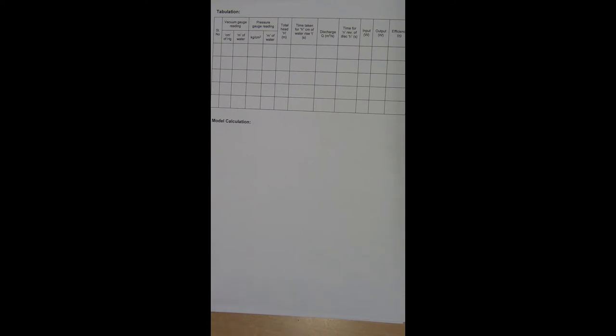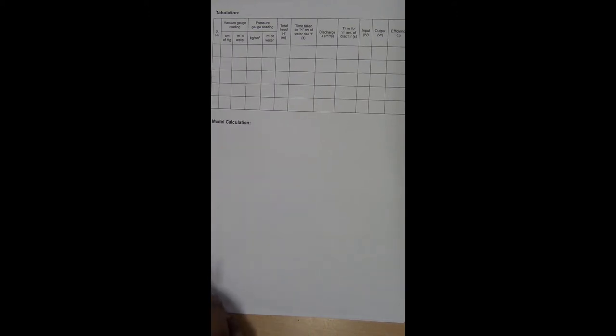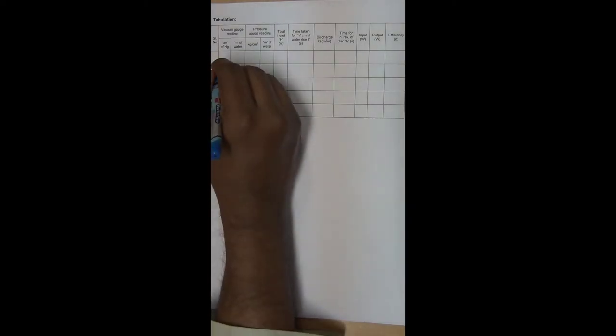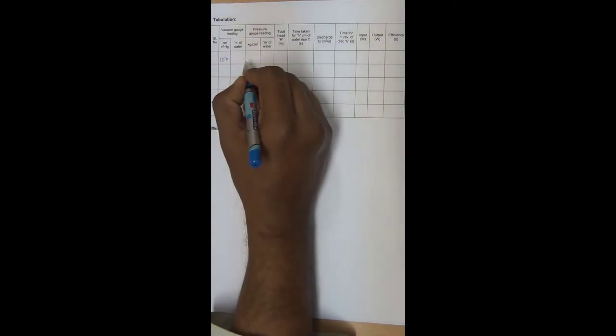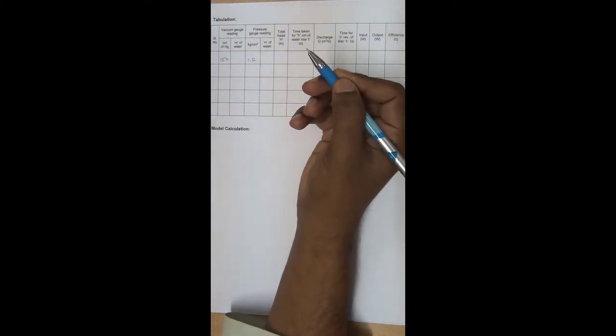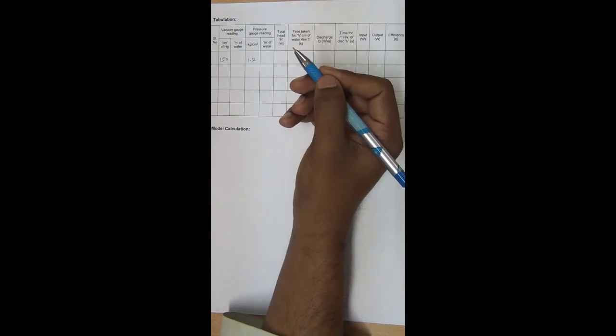The model calculation for the now PS is 150 and pressure gauge reading is 1.2 and time taken is 13.23 and time taken for the revolution is 36.1.